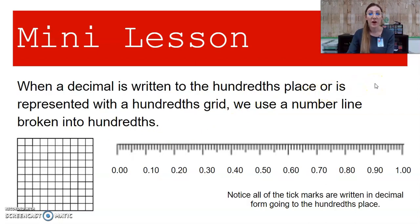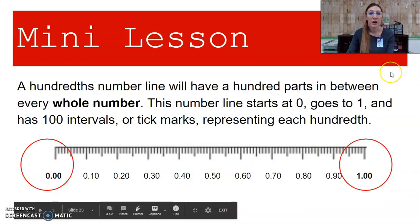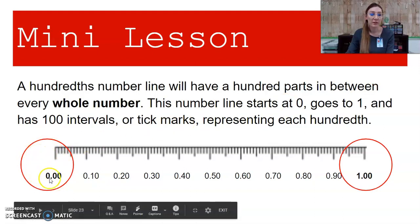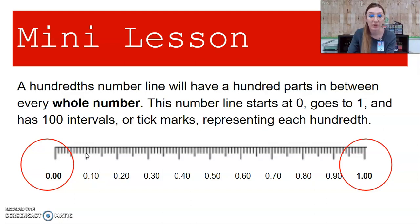When a decimal is written to the hundredths place or is represented with a hundredths grid, we use a number line broken into hundredths. Notice all of the tick marks are written in decimal form going to the hundredths place — so this is ten-hundredths, twenty-hundredths, thirty-hundredths. A hundredths number line will have a hundred parts in between every whole number. This number line starts at zero and goes to one and has one hundred intervals or tick marks representing each hundredth. I can count from zero to ten-hundredths and in between there will be ten small tick marks.